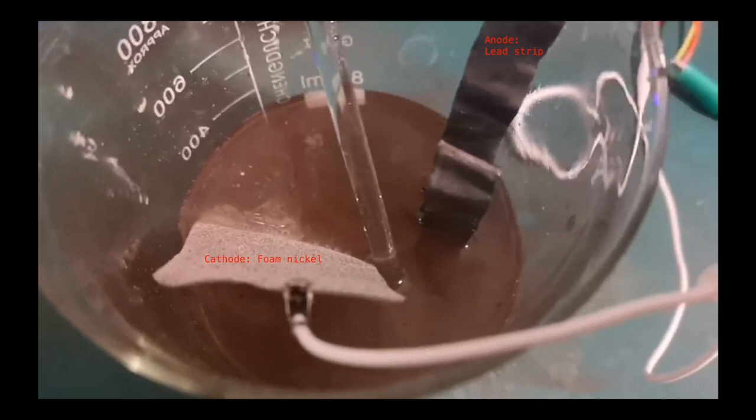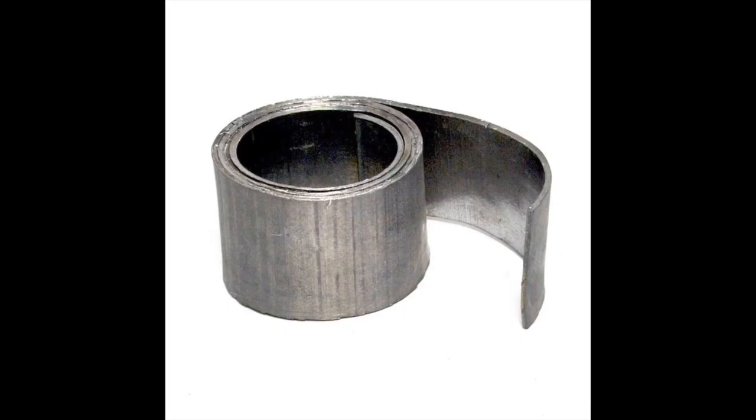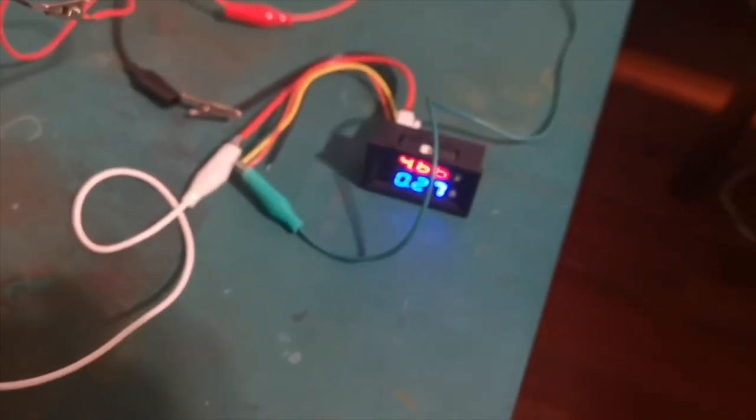The anode is harder to choose, but plain lead metal gives an outstanding result. The ammeter shows 0.27 amps, and the cathode is bubbling vigorously.